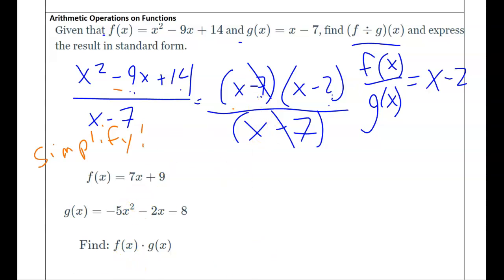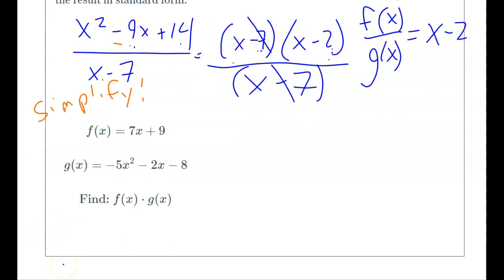Alright. f(x) times g(x). Well, that means exactly what it sounds like. So f(x), 7x + 9, times g(x), -5x² - 2x - 8.